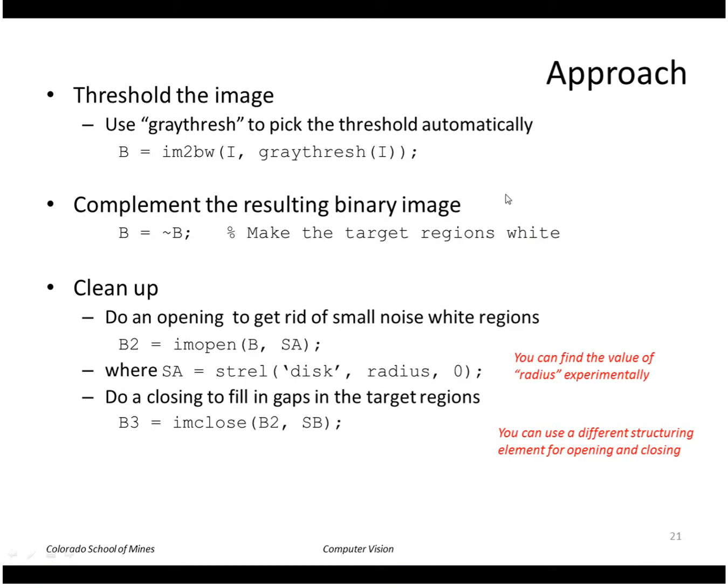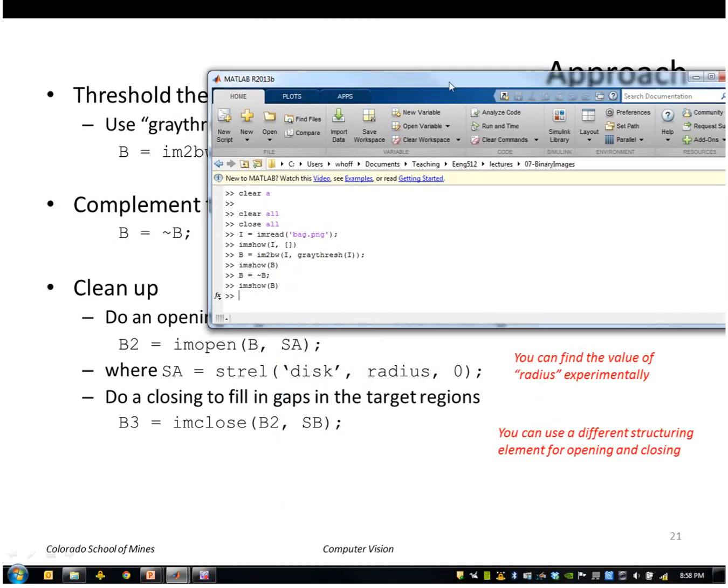So let's do opening and closing. The first thing we'll do is opening to get rid of very small regions. So we're going to use a structuring element and I've already tried this. I know a structuring element of radius one works pretty well here.